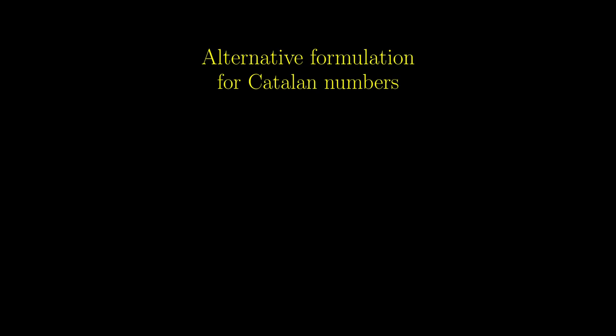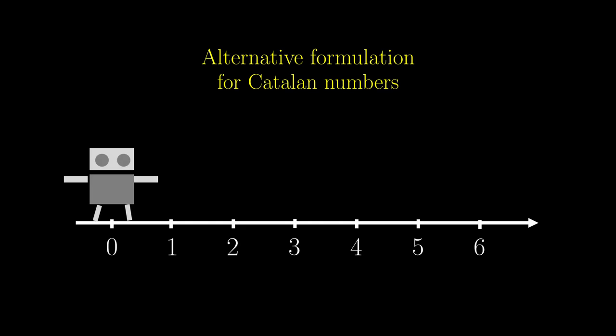The Catalan numbers can also be formulated in a one-dimensional way. Assume a robot is initially on the origin walking along a non-negative number line. It can either walk to the left or to the right, but it cannot cross the zero mark.